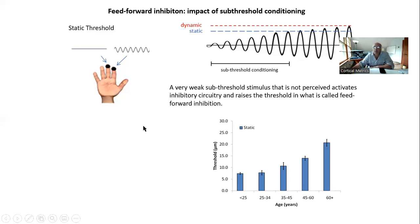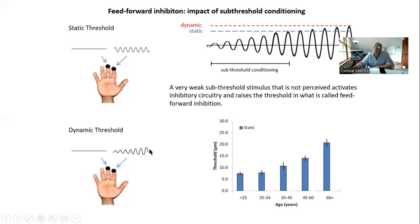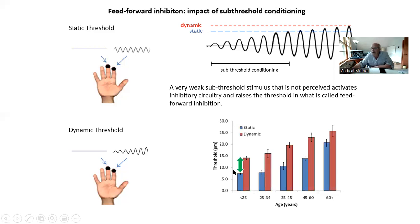With dynamic threshold, a zero stimulus is presented on one finger and a stimulus that ramps up is presented on the other finger. When that stimulus ramps up, at some point you'll feel it and you respond. The stimulus basically sneaks up on the threshold. In healthy populations, dynamic threshold is always larger than static threshold, and what we're interested in is the difference between those two.